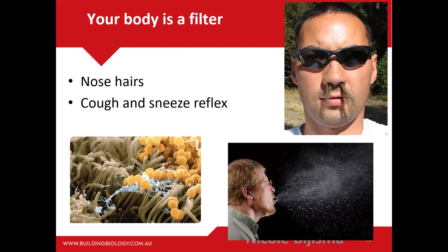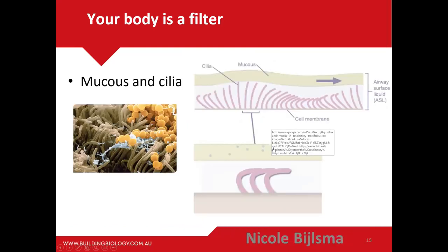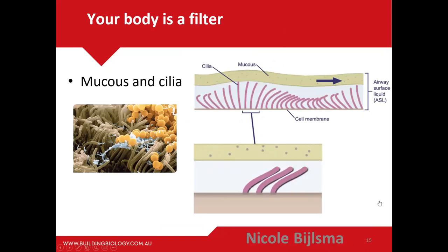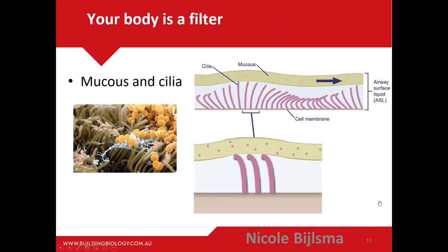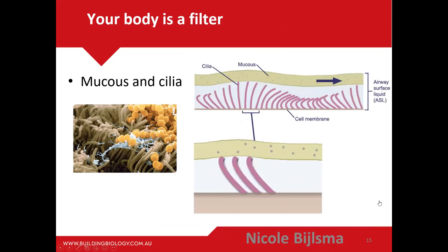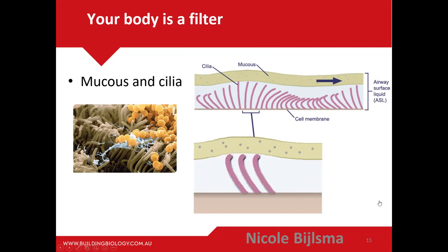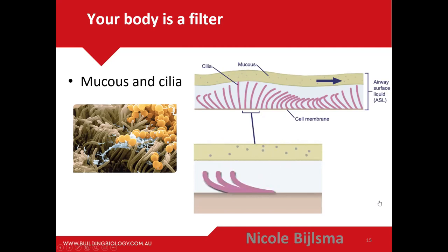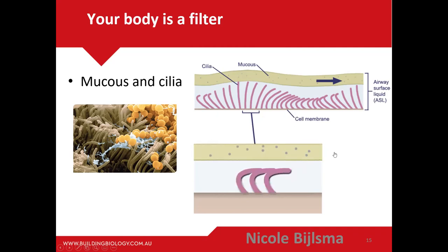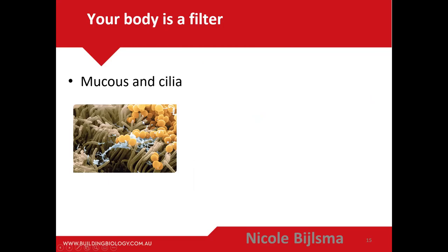Coughing and sneezing are protective mechanisms your body uses to expel particles. If you smoke, you kill your cilia — the fine projections throughout your respiratory tract — which is why lung cancer risk increases significantly: you have no way to clear particles from the lower respiratory tract. The good news is that when you stop smoking, much of the cilia do grow back.